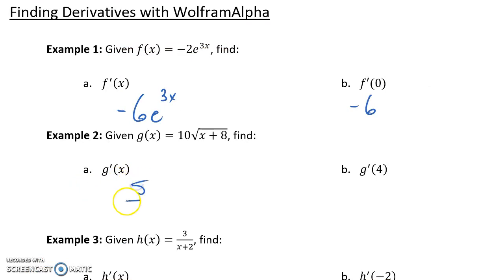So here we found our derivative function to be 5 over the square root of x plus 8. And evaluated at x equals 4, we get 5 times the square root of 3 over 6.